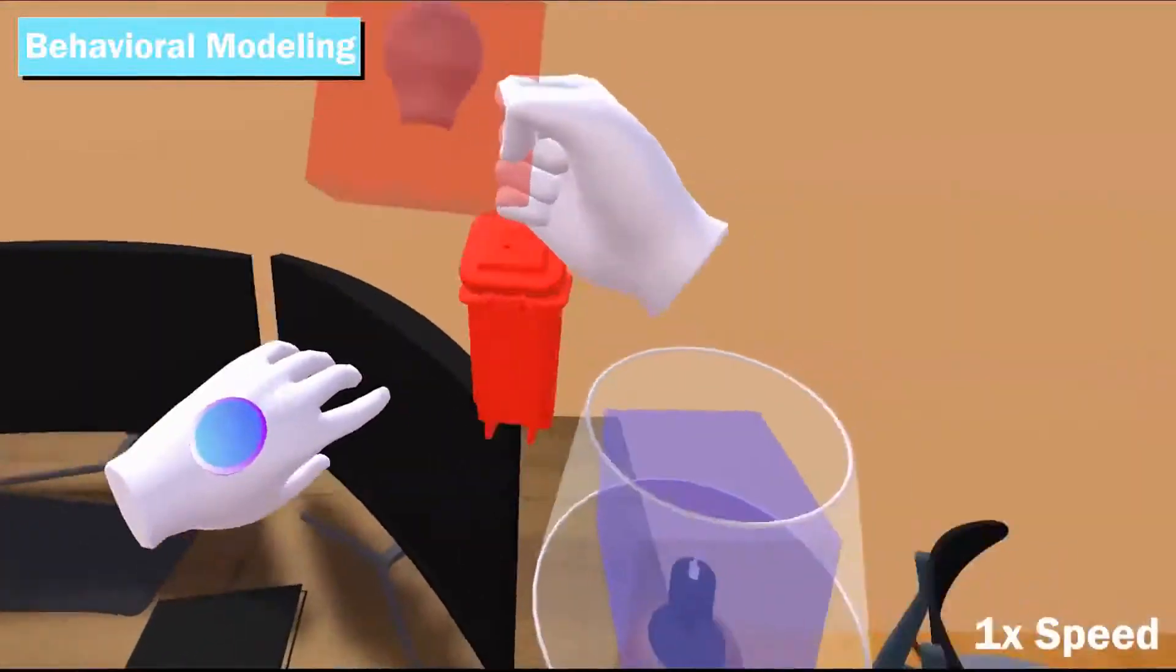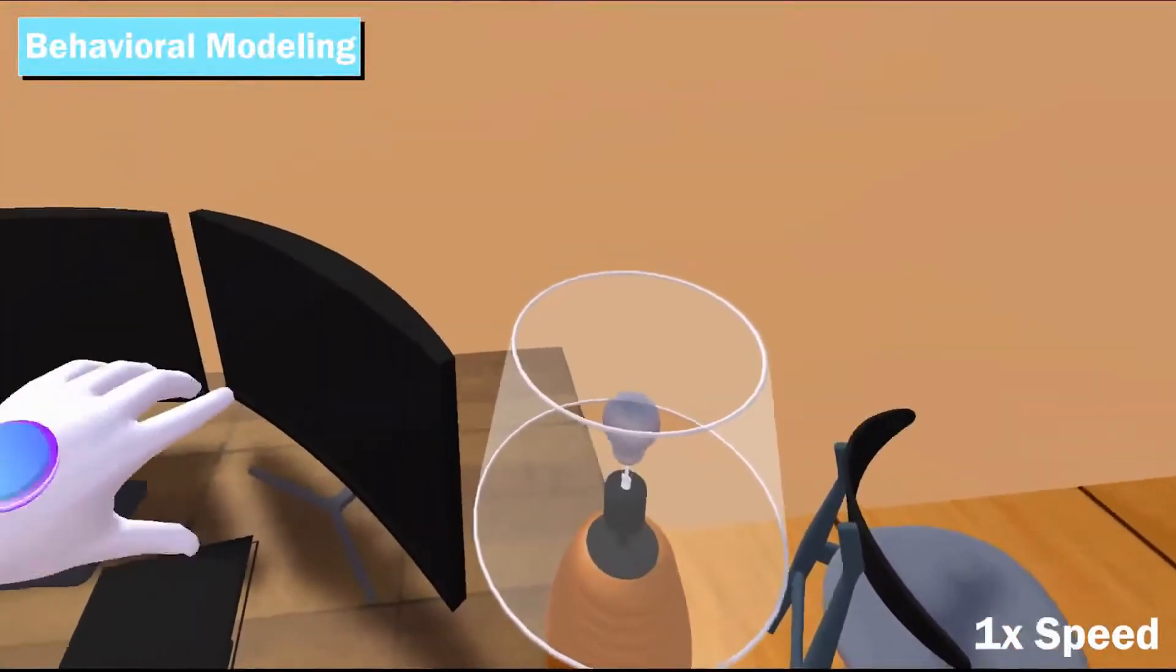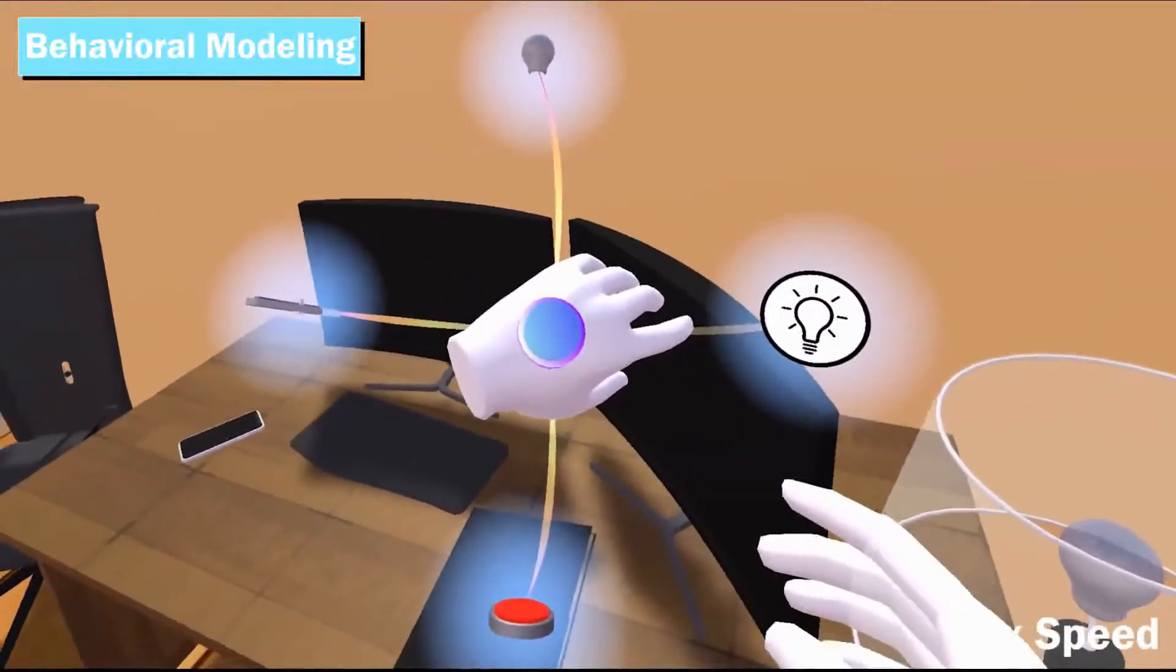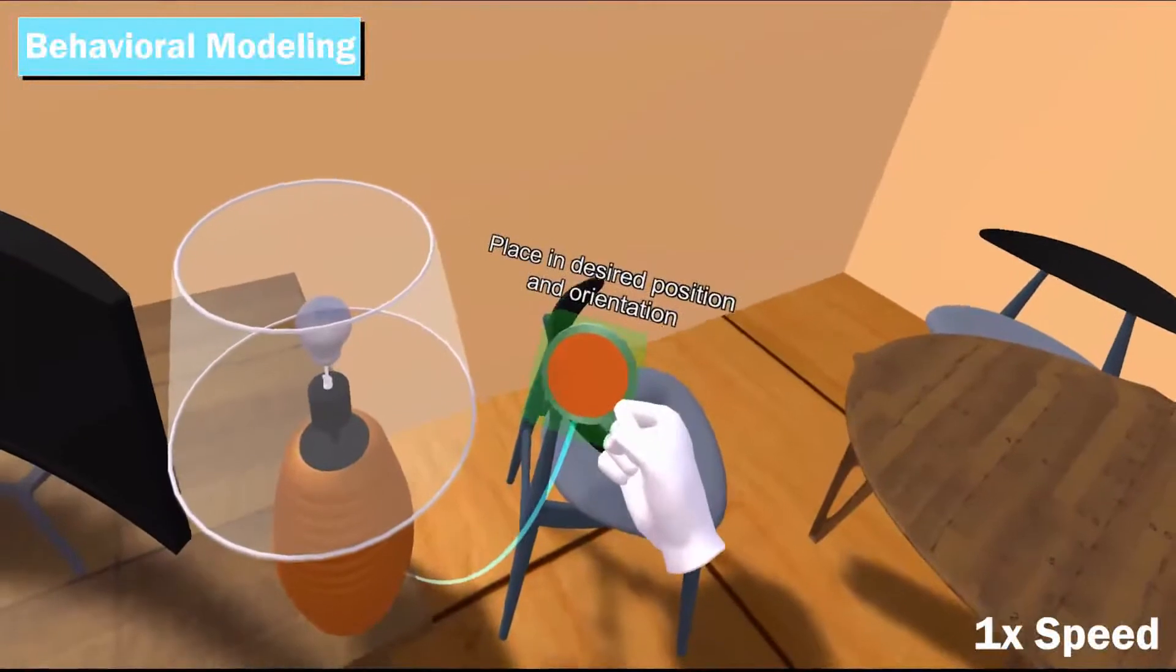After the retrieval process is complete, users can attach affordances to virtual objects to make them interactable. We define the intrinsic behaviors of virtual objects to be categorized into three groups.